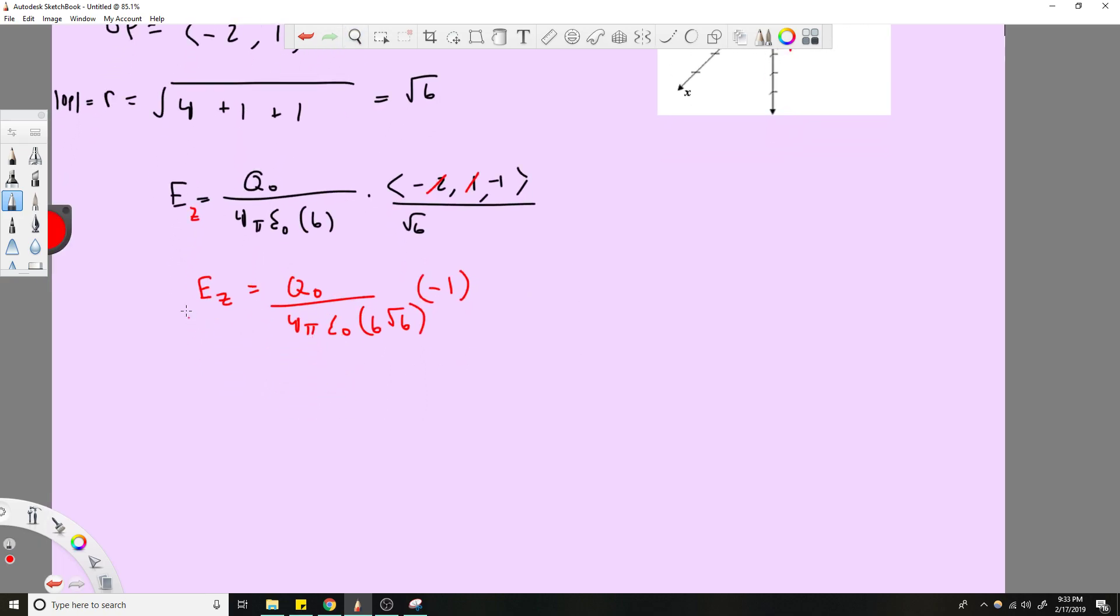So solving for Q0, because we know this value, this was given up in the question above. This is 1 kilovolt per meter. So solving for Q0, you would get that equal to 1.63 microcoulombs.